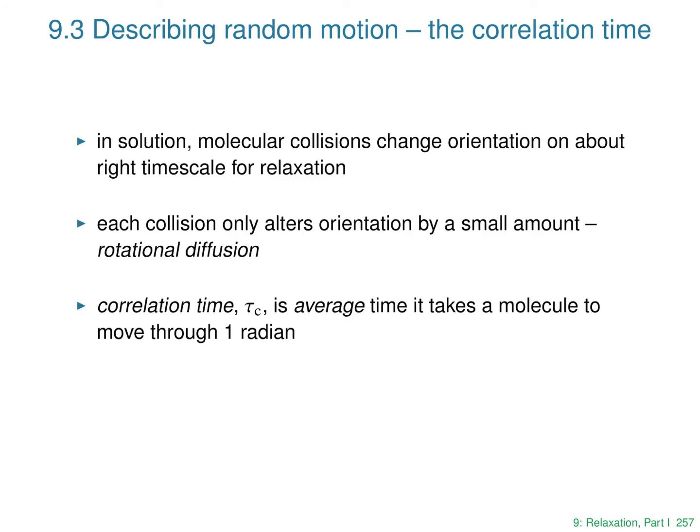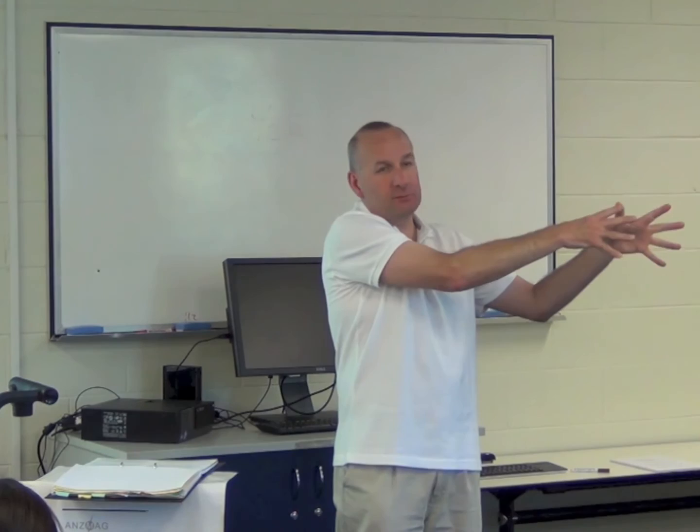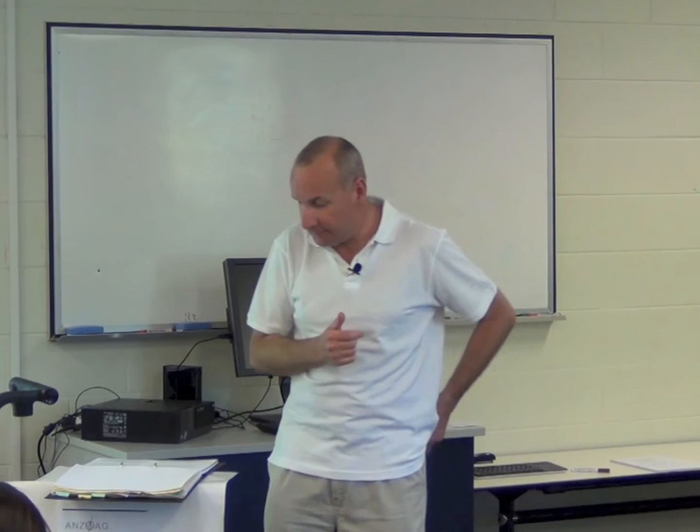Rotational diffusion is characterised by something called the correlation time. The correlation time is the average time it takes a molecule to move through one radian. You imagine your molecule wobbling, and you wait until it might have moved through one radian, then look at the next molecule, and work out the average for all the molecules. That's what the correlation time is — a single parameter that characterises this random diffusive motion. If the correlation time is short, the molecules are moving quickly; if the correlation time is long, the molecules are moving slowly.